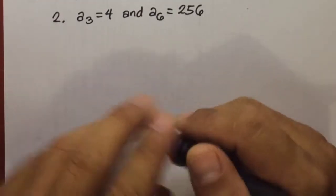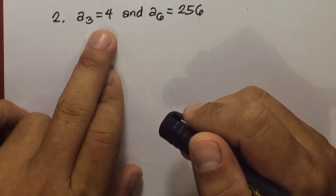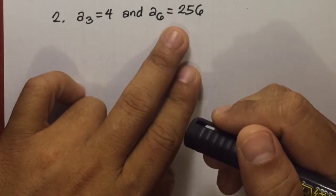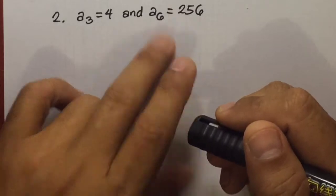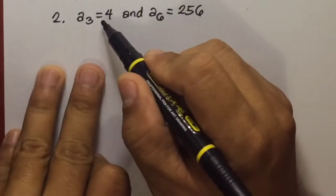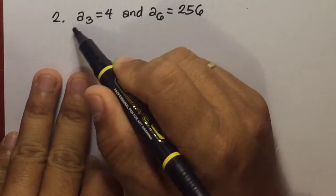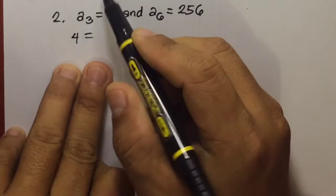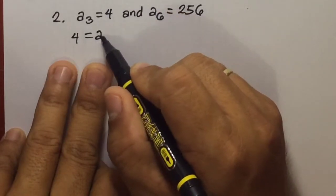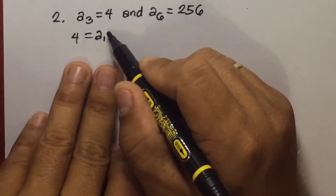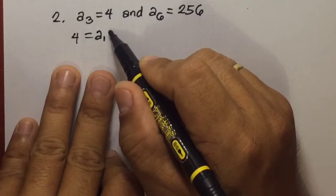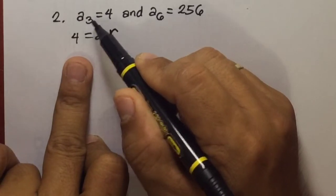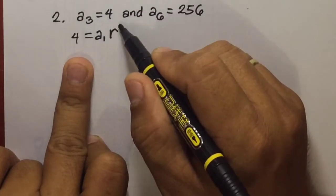For number 2, given that a sub 3 equals 4 and a sub 6 equals 256, find the tenth term. We can represent a sub 3 as: 4 equals a sub 1 times R raised to the power of 3 minus 1, which is R squared. So the first equation is 4 equals a sub 1 times R squared.